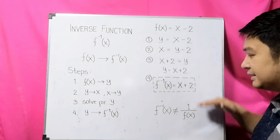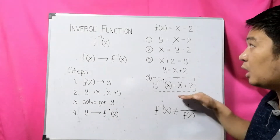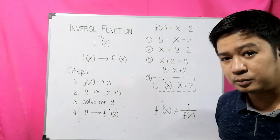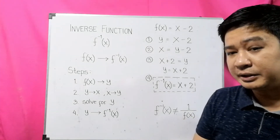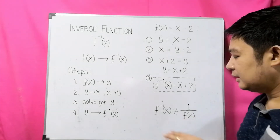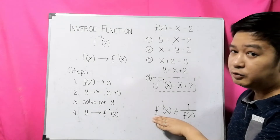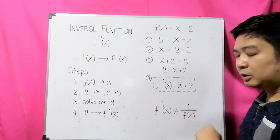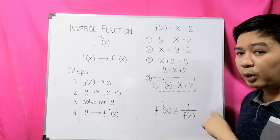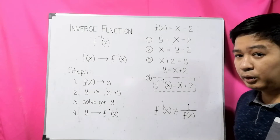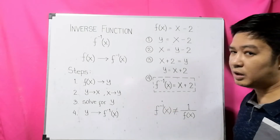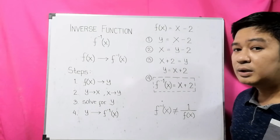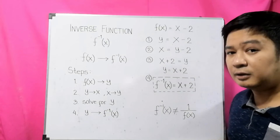This is the inverse function of our original function x minus 2. One important reminder: the inverse function f inverse of x is not equal to 1 over f of x. That is, the inverse function is not the same as the reciprocal of the original function.